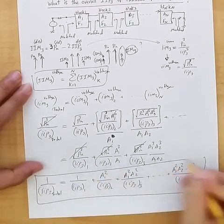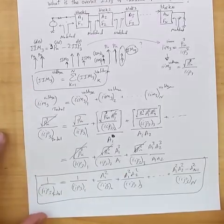So this is the total worst case IIP3 for the cascade of these RF blocks.